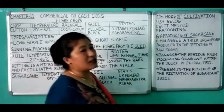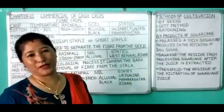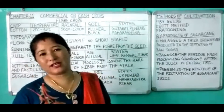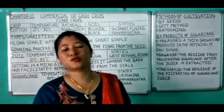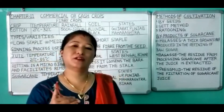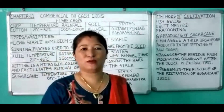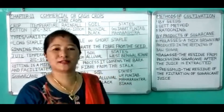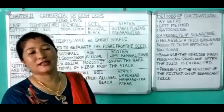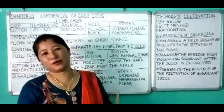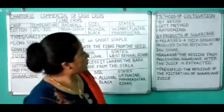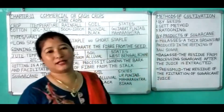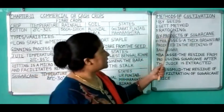The third and important method is ratani. During the first harvest of sugarcane, the stem is cut close to the ground, leaving the root intact in the soil. The second crop that comes from the same root is known as a ratoon crop, and the process is known as ratani.